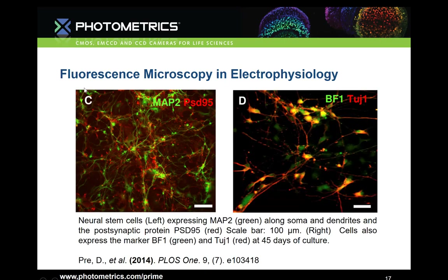This is another example of fluorescence microscopy from the Sanford Burnham Priebus Institute. They looked at the little-known electrophysiological properties of induced pluripotent neuronal stem cells, including the resting membrane potential, action potential, sodium ion and potassium ion channels, as well as other things.